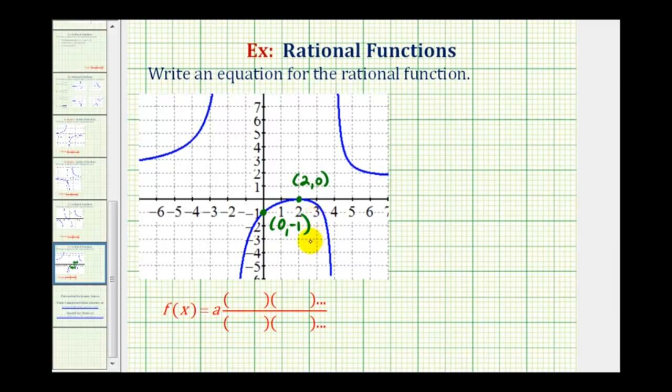Now let's look at the vertical asymptotes. Notice we have a vertical asymptote here at x equals negative 2, and another one here at x equals 4.